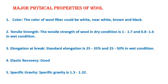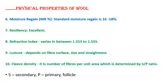Number five is specific gravity, which indicates relative density — that is, weight per unit volume. In case of wool, the specific gravity is 1.3 to 1.32. Number six is moisture regain — how much percent of moisture it can get back. The standard moisture regain is about 16 to 18%. Number seven is resiliency, which is quite excellent in case of wool fiber. Number eight is refractive index, measured with a refractometer, which varies between 1.553 to 1.555.